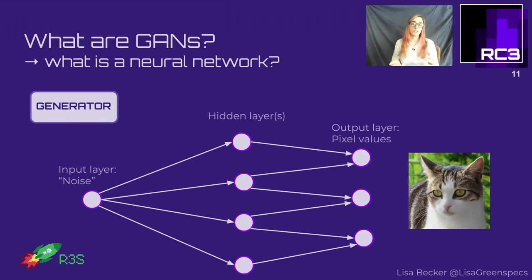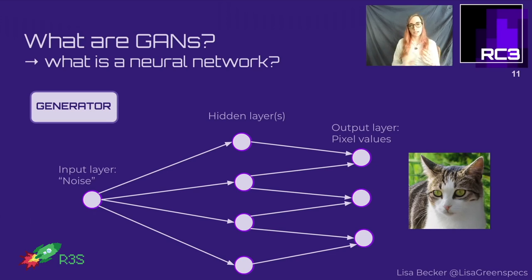The generator, on the other hand, works the other way around. It gets a so-called noise as input - randomly sampled values - forwards those to hidden layers which are supposed to form ears, eyes, snout and so on, and transforms that into pixel values to generate the image of a cat.